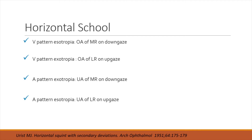There is another school of thought known as the horizontal school of thought, wherein if you get a pattern but don't get any oblique muscle overaction associated with it, they say it's probably due to some horizontal muscle dysfunction. They say if there is overaction of the medial rectus on downgaze, that leads to a V pattern esotropia. However, this school of thought is not really accepted, so we usually go by the oblique school of thought. There is also a vertical school of thought which we do not really follow much.